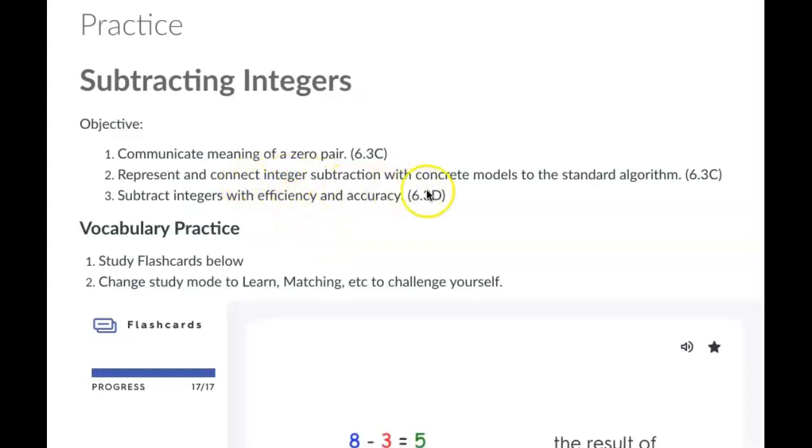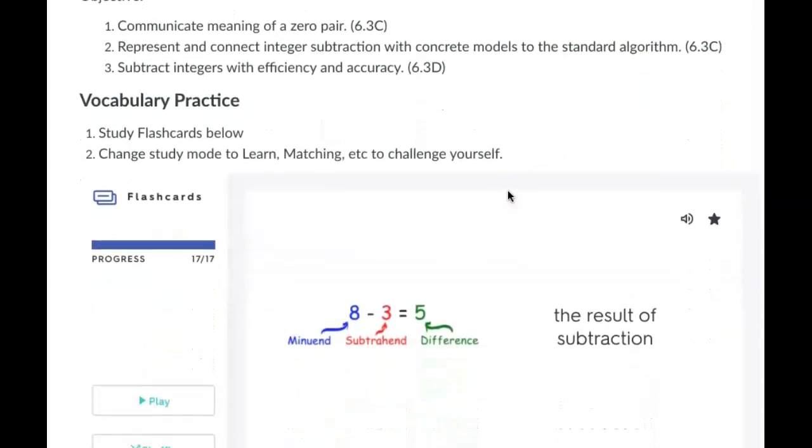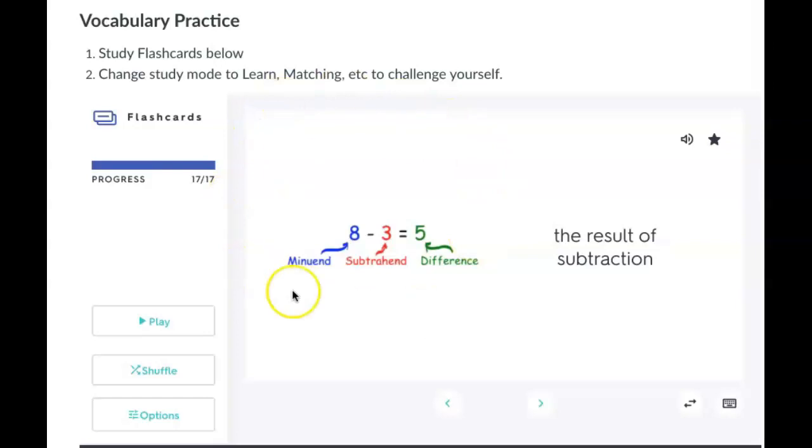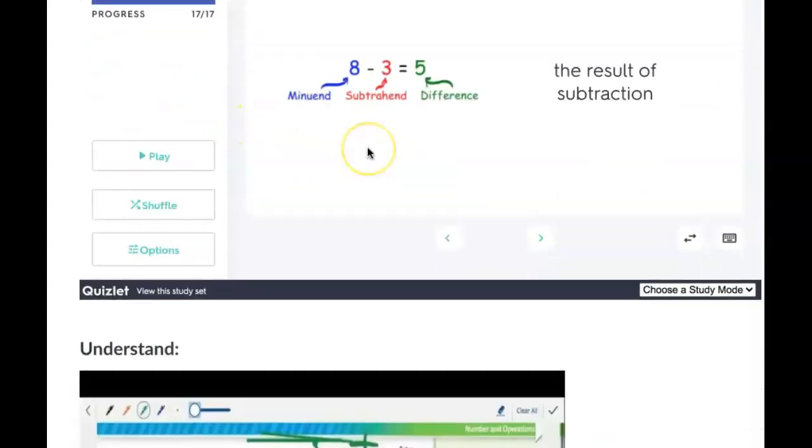Make sure you know how to use concrete models like number lines and counters to do this process as well. Make sure you are reviewing the vocabulary. There will be a quiz. There are 17 questions or words we need to understand.